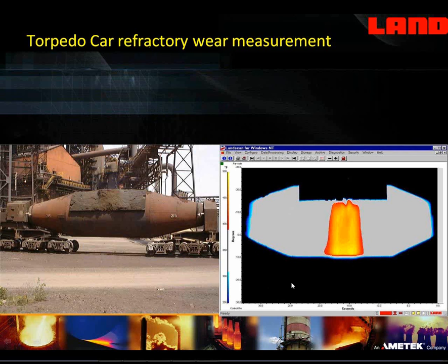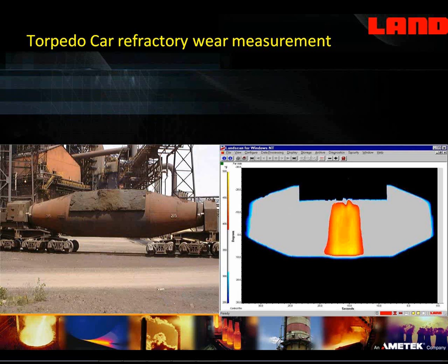We see here on the right side the thermal image taken by a scanner next to the line. That scanner is scanning vertically, and as the car goes by, it's producing a thermal image. At the opposite side of the line is another scanner taking an image of the other side. In this particular case, we have RFID tags mounted onto the frame of the torpedo car so that as each torpedo car passes the scanner, we use the file name for the torpedo car on the saved data. In that way, we can go back through the database and scroll back on one particular car and see a growth of wear over a period of time.